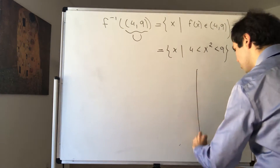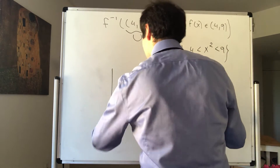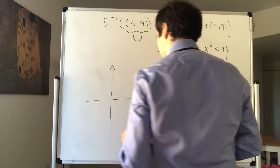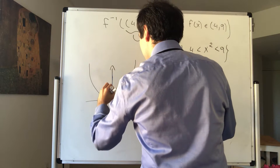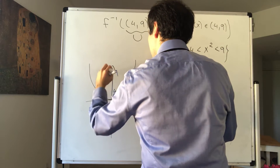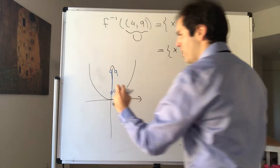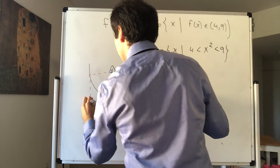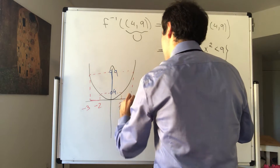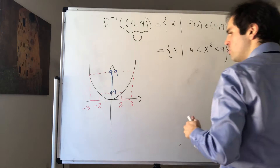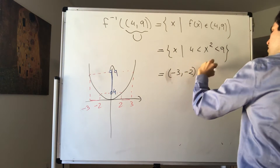Let's see picture-wise what this looks like. This is our parabola, and this is the open interval (4, 9) — without the endpoints. x squared is in (4, 9) if and only if either x is between minus 3 and minus 2, or x is between 2 and 3. So it's the interval (−3, −2) union the interval (2, 3).